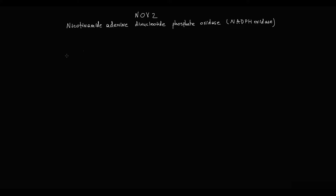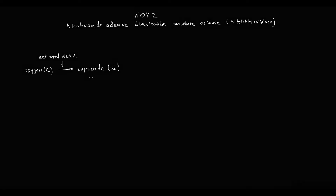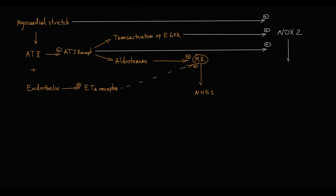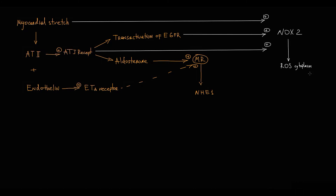In its activated state, this enzyme converts oxygen to superoxide, which is a very aggressive free radical. So activation of NOX2 results in production of free radicals, also called reactive oxygen species.